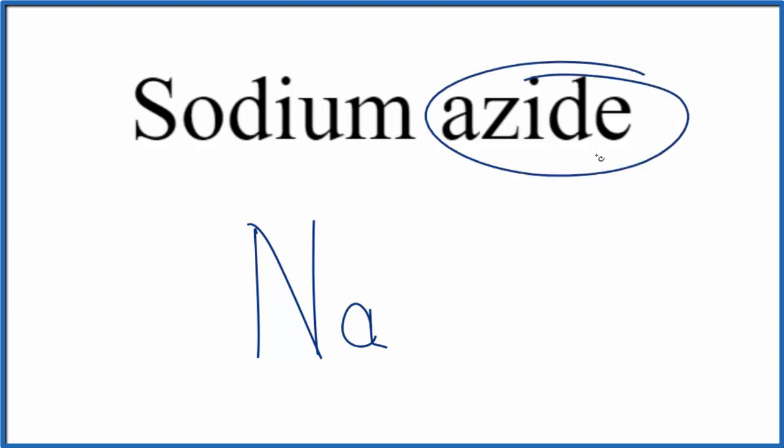For azide, you're not going to find that on the periodic table. This is a polyatomic ion. So you memorize that azide, the azide polyatomic ion, is N3, and the whole thing has an ionic charge of 1 minus, or if you're allowed, you look this up on a table of polyatomic ions.